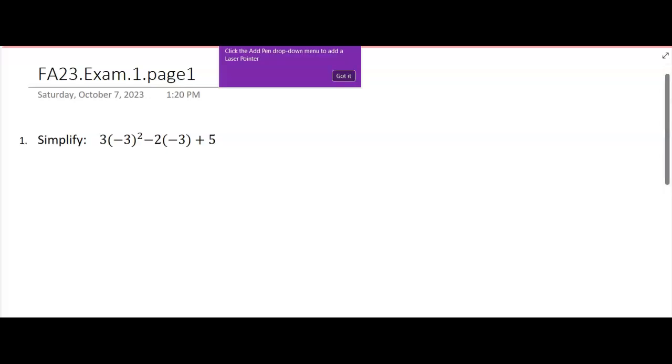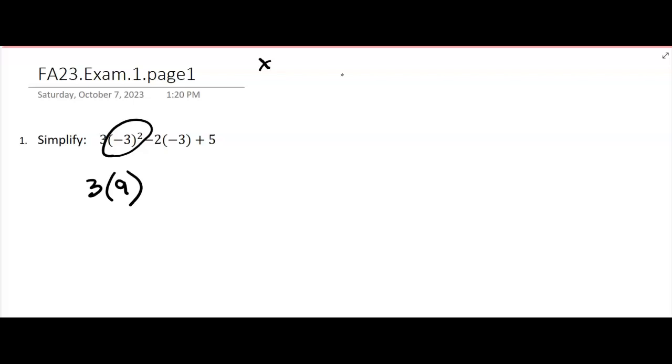Okay, so this first problem had to do with the order of operations. We're going to do the exponent part first, so that's going to be three times nine, using the parentheses to indicate multiplication. Where does this come from? That's negative three squared, which means negative three times negative three. That's where the nine comes from.